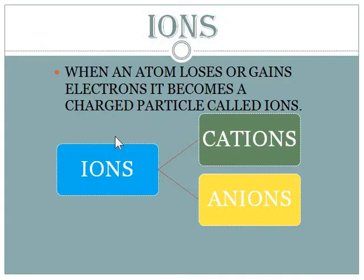Now let's look at what ions are. When an atom loses or gains electrons, it becomes a charged particle called an ion. In an atomic structure, the outermost orbit is also known as valence electrons, and these electrons take part in chemical bonding. When the outermost orbit loses or gains electrons, it becomes a charged particle known as an ion. Ions are of two types: cations and anions.